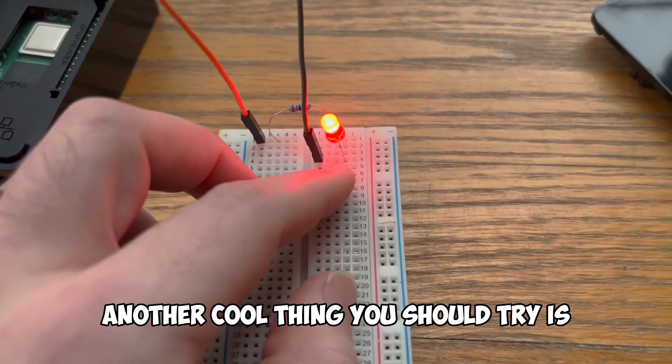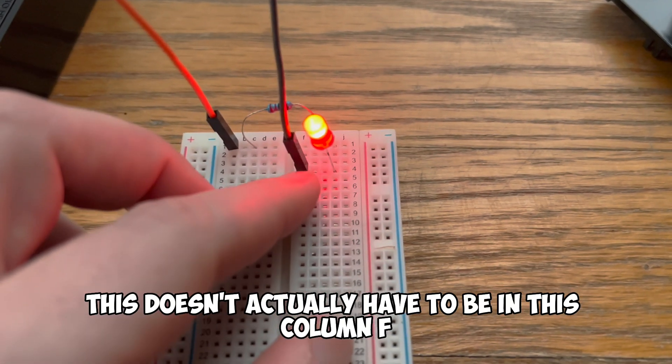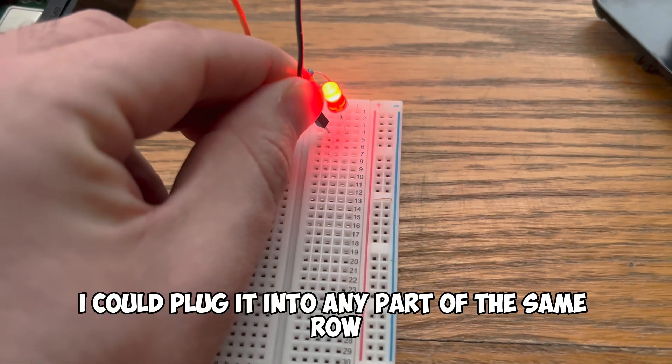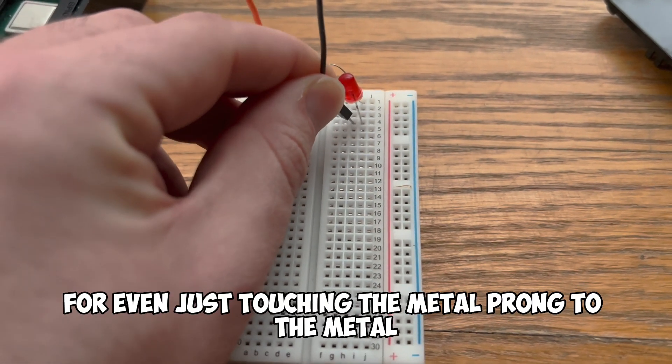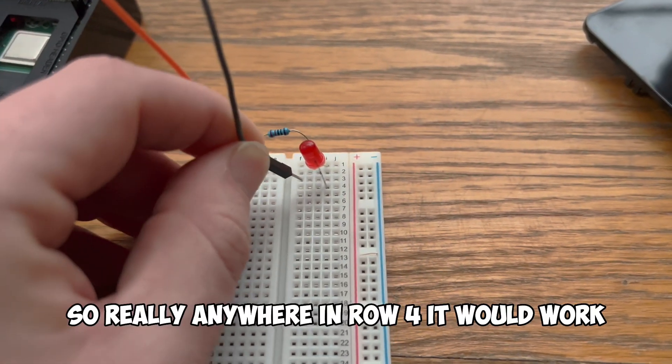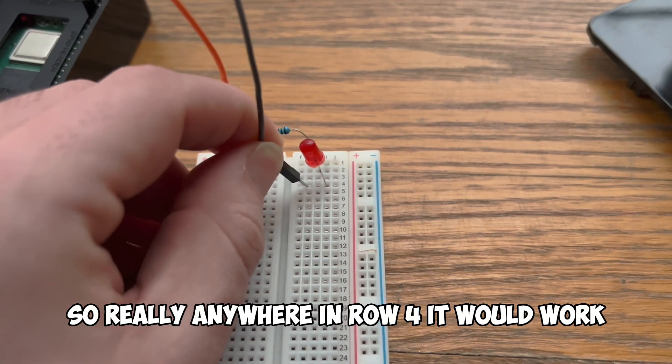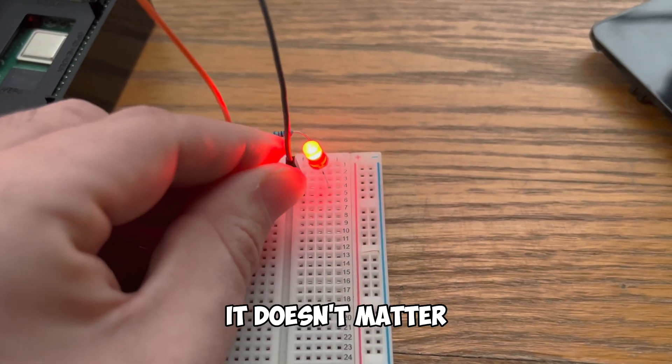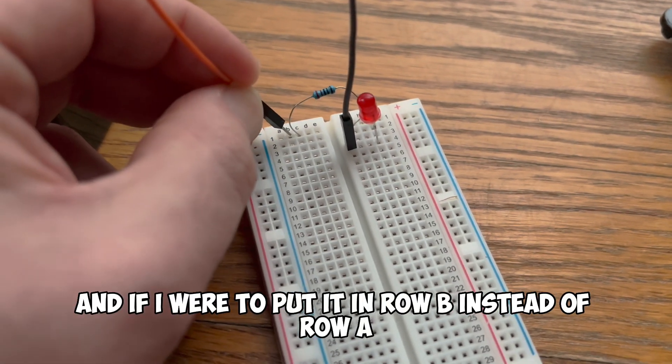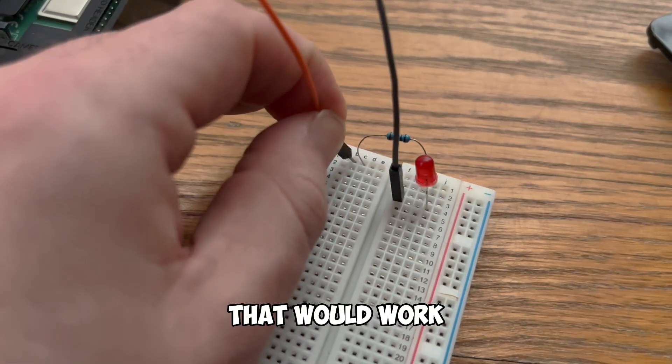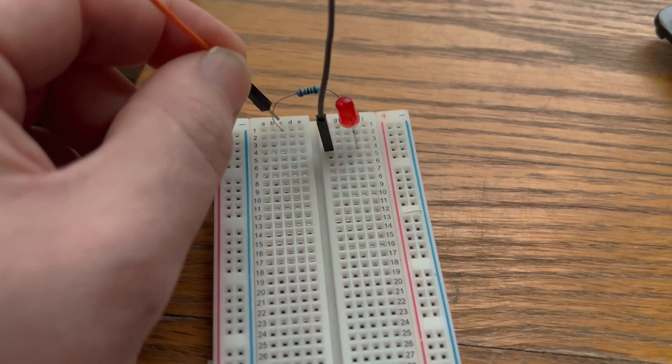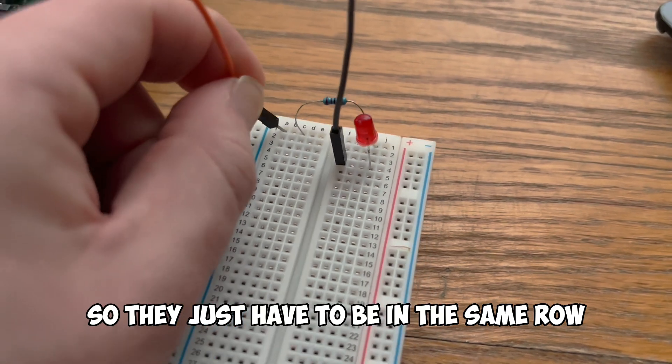Another cool thing you should try is this doesn't actually have to be in this column F. If I unplug this I could plug it into any part of the same row 4. Even just touching the metal prong to the metal will connect to the circuit. So really anywhere in row 4 it would work. It doesn't matter. Same thing over here. If I were to have unplugged this and if I were to put it in row B instead of row A that would work. If I were to put it in row E that would work. Even if I just touched the resistor it would work. So they just have to be in the same row.